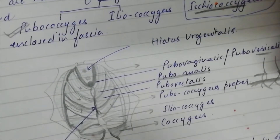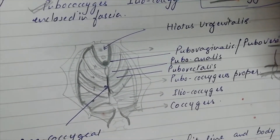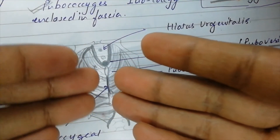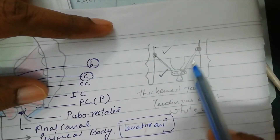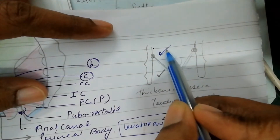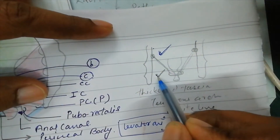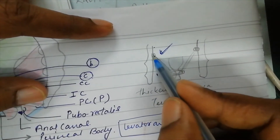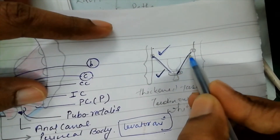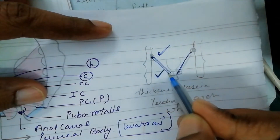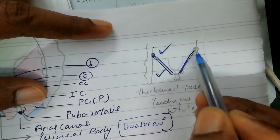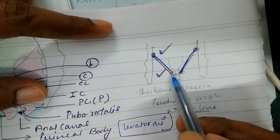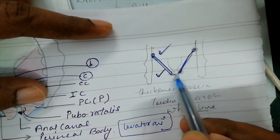The Levator Ani muscle acts like a sling around the apertures situated within the urogenital area. It forms a gutter-shaped partition separating the pelvic region into the pelvic cavity above and the perineum below. This oblique gutter-shaped muscular partition originates from the lateral pelvic wall and converges towards the midline.